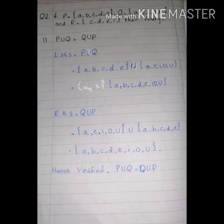Now our left-hand side equals our right-hand side. Hence verified: P union Q equals Q union P.